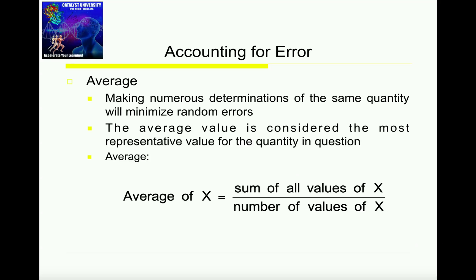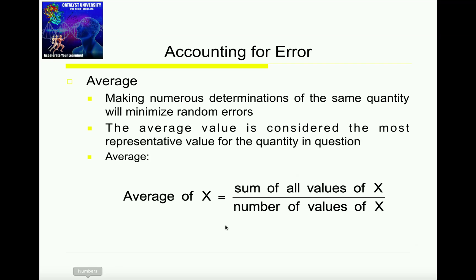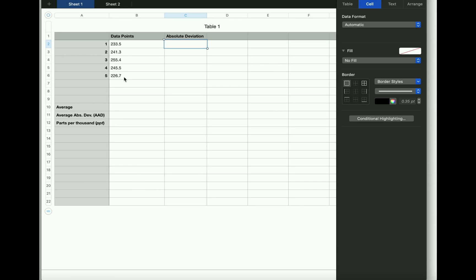I'm going to be switching between the PowerPoint and an Excel file with some data. The first thing we need to do if we want to calculate the parts per thousand is calculate an average. Most of you probably already know how to calculate an average. If you want to calculate the average of something, we take the sum of all the values and divide by the number of values. So right here, I have five data points.